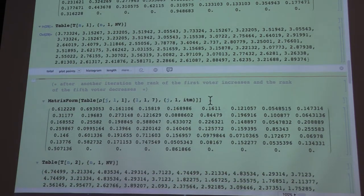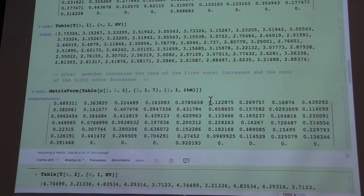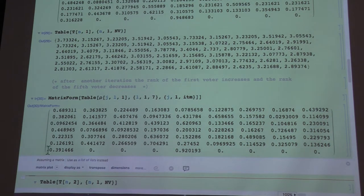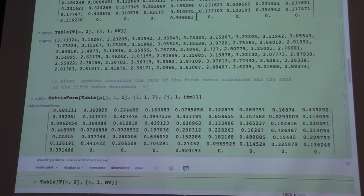And now we keep iterating. So if we run it once again to compute the new ranks, you see, the number one, the choice of the honest voter, has his rank increased to 0.39 from 0.31. And the colluding voters' choice has slightly dropped.